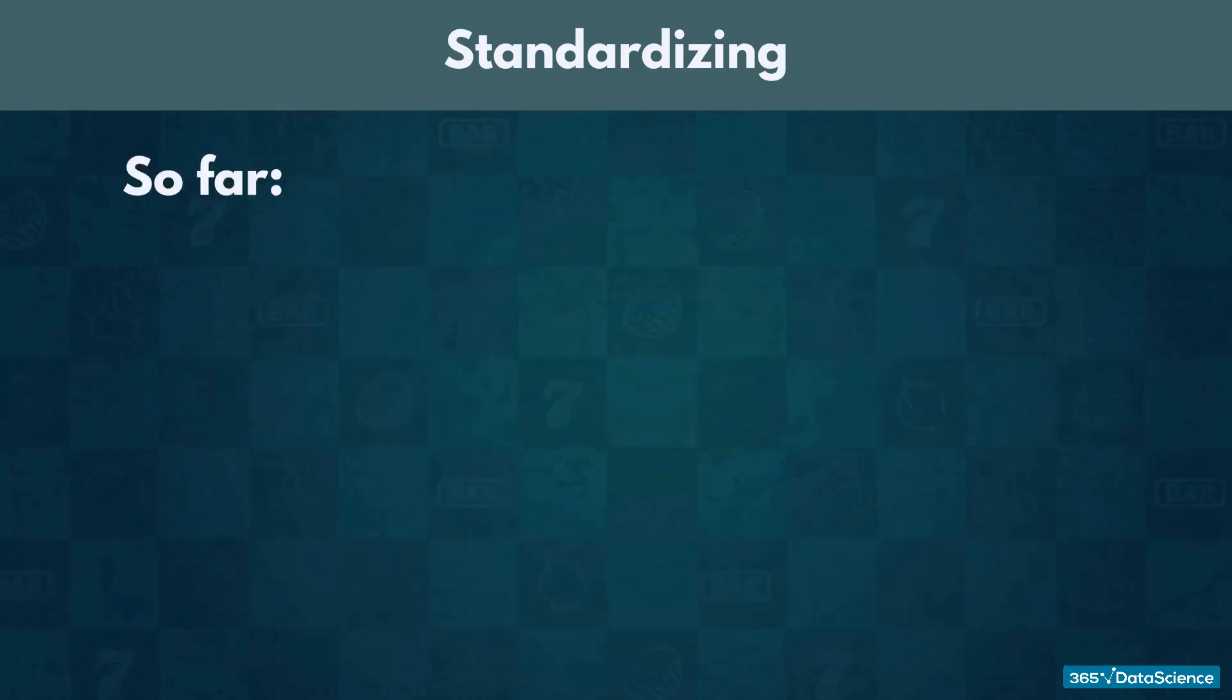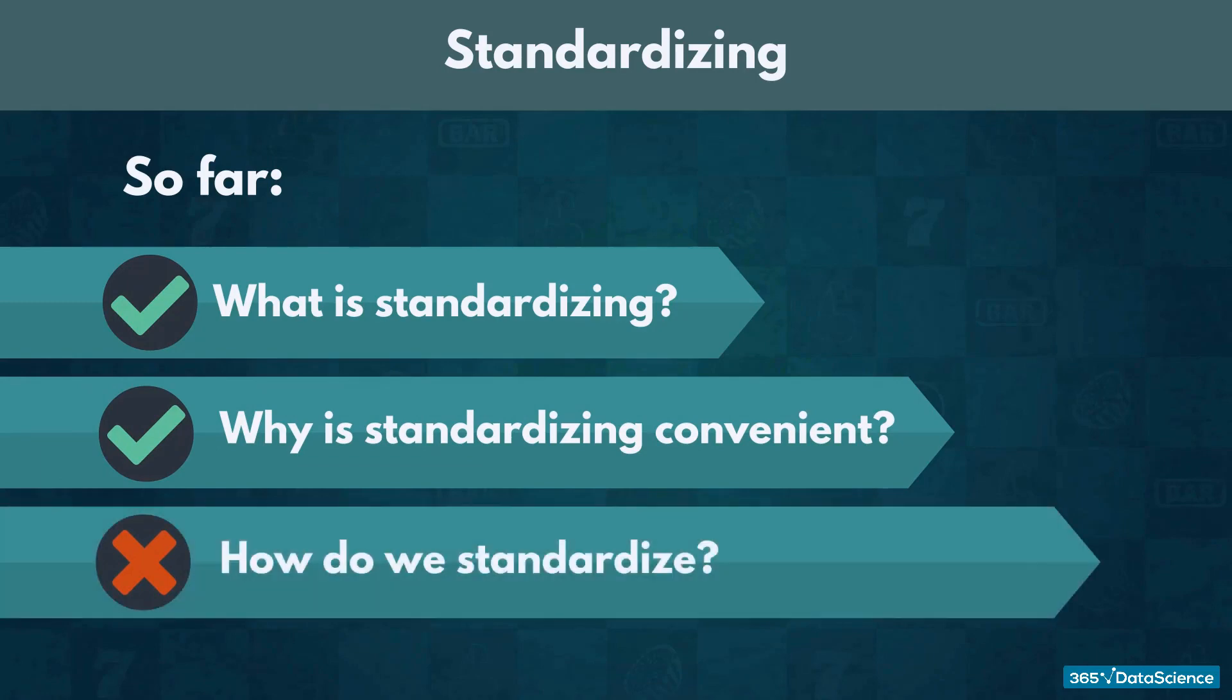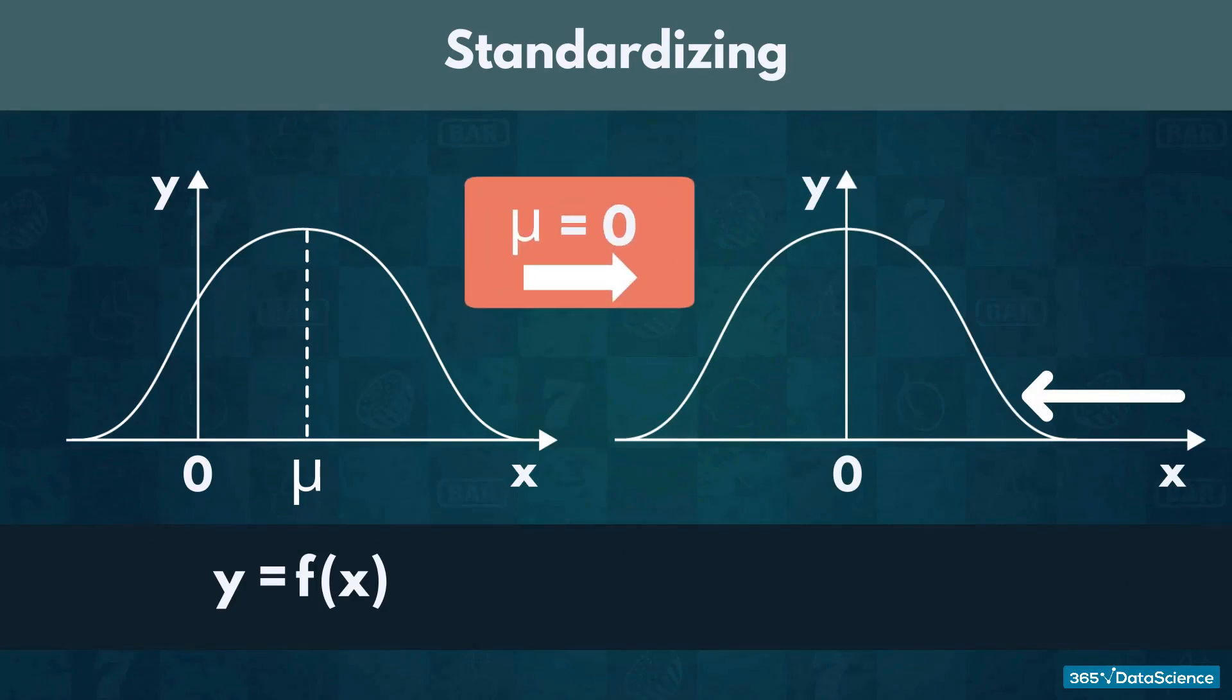So far we have learned what standardizing is and why it's convenient. What we haven't talked about is how to do it. First, we wish to move the graph either to the left or to the right until its mean equals 0. The way we would do that is by subtracting the mean, μ, from every element.